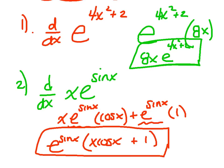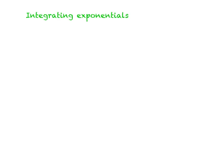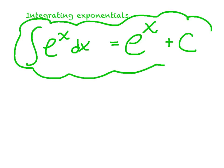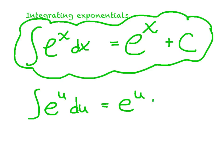Hopefully a nice easy review of derivatives of exponentials. Now recall, the derivative of e to the x was e to the x. Therefore, the integral of e to the x is e to the x plus c. If you have any junk up in the exponent — meaning you'd need a chain rule to differentiate — you're going to need u-substitution to integrate. And as a rule of thumb, 99% of the time we can pick the exponent as our u.